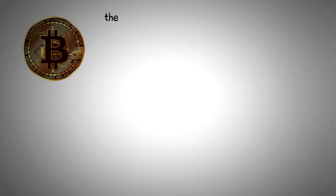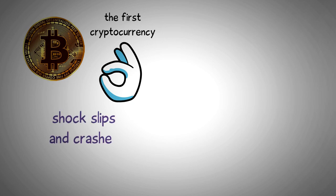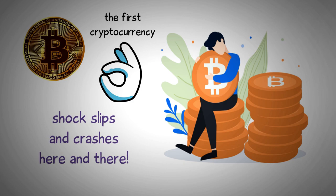Safe to say Bitcoin, the first cryptocurrency, remains the best known today. But there have been shock slips and crashes here and there with this currency which makes investors turn their sights to the several thousand just like it. Generally, cryptocurrencies fall into two categories: coins and tokens.